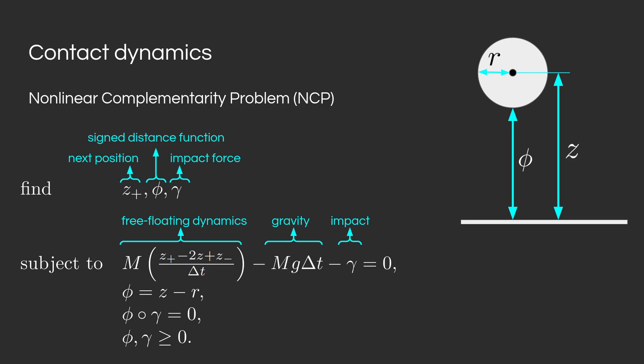This constraint is the contact dynamics constraint. We also have one additional constraint, which encodes the analytic expression of the signed distance function. And finally, we have one complementary constraint: phi times gamma is equal to zero, with phi and gamma positive. This encodes the binary switching behavior between being in contact and not being in contact.